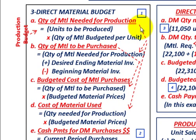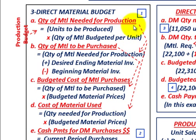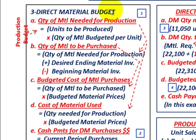Remember, direct materials involve many different materials across different products. You have to go through each product line using a bill of materials listing all materials used in each product. That summarizes our discussion on setting up the direct materials budget and making the calculations.